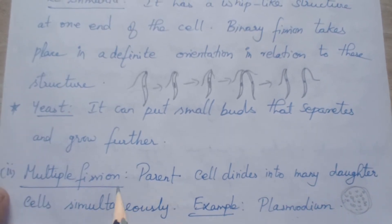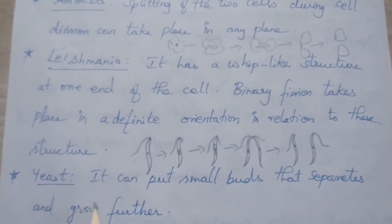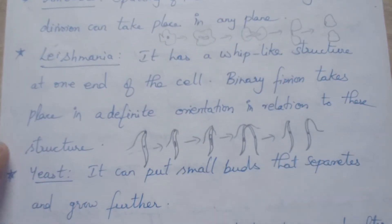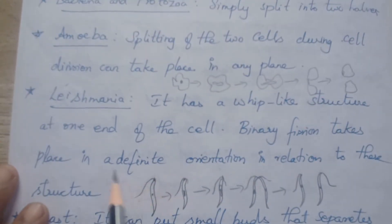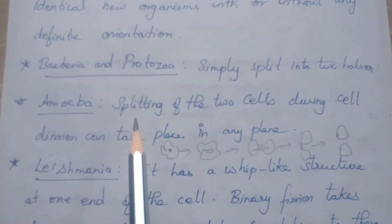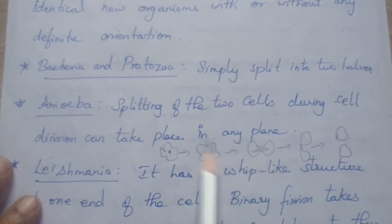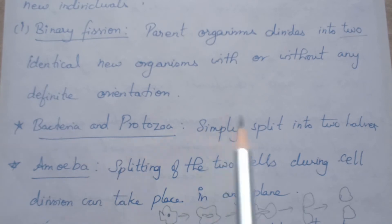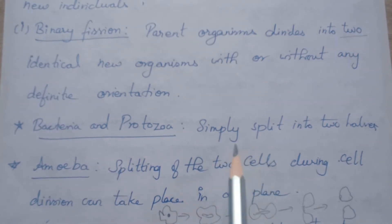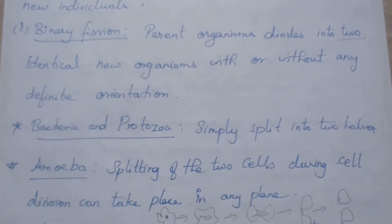Multiple fission takes place in plasmodium. In yeast, a small bud grows and separates. With a definite orientation, Leishmania will reproduce. Amoeba does not follow any orientation. Simply bacteria and protozoa split into two halves. These are the types of fission.